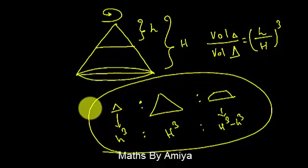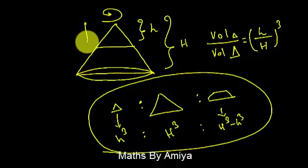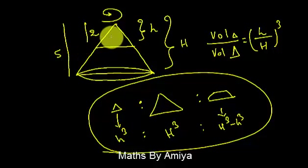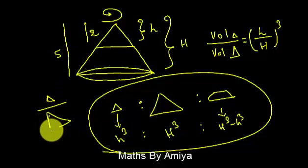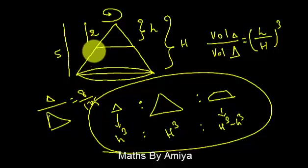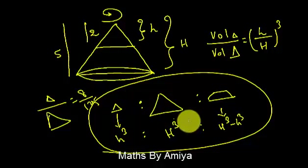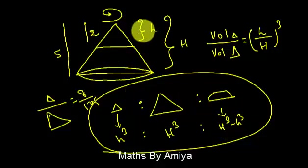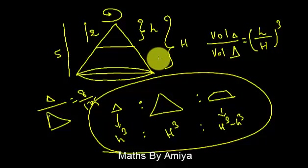I hope it is clear. For example, assume the height of the smaller cone is 2 and the height of the bigger cone is 5 units. We can say the volume of the smaller cone to the volume of the bigger cone is nothing but 8 by 125, that is 2 by 5 whole cube. We can also find the ratio of the frustum, which is capital H cubed minus small h cubed.